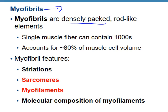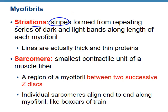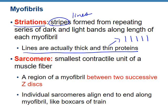Now we need to look inside the myofibrils. These are densely packed — hundreds to thousands per muscle fiber cell. We're going to look at striations or lines, sarcomeres, and myofilaments, then the molecular composition of those myofilaments. The striations have to do with the thick and thin proteins, which create those lines or stripes on the myofibrils. These thick and thin proteins are called myofilaments.